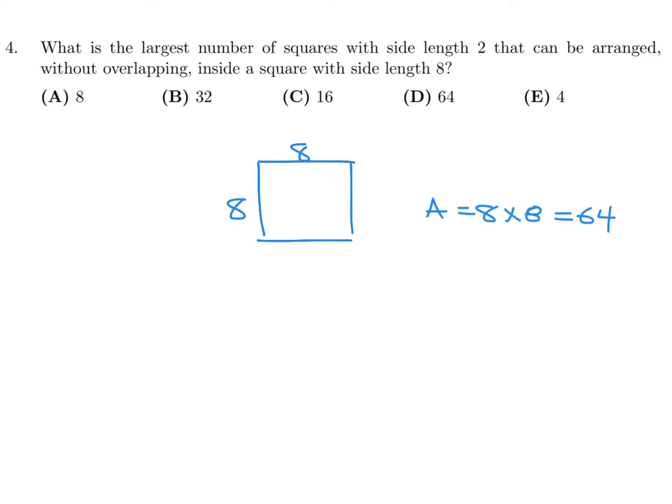Now a square of side length 2, that would have an area of 2 by 2, which is 4. So basically what they're asking is how many of these fit into that. So 64 divided by 4 is the answer, and that is 16. So number 4, the answer is C.